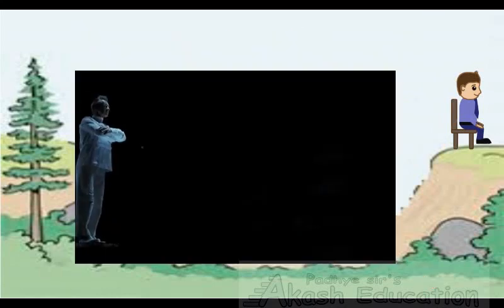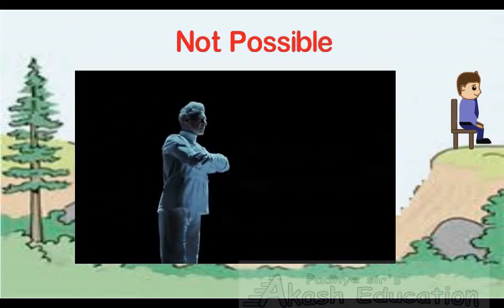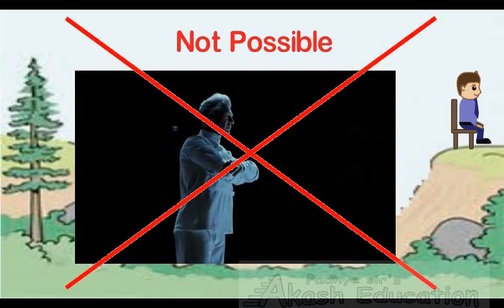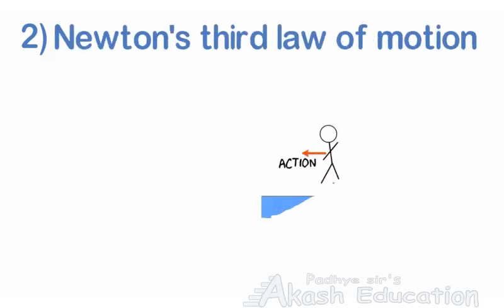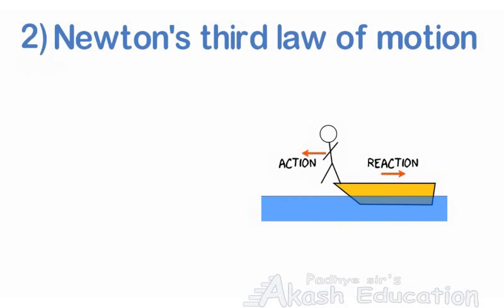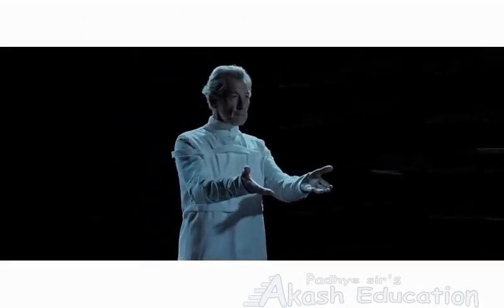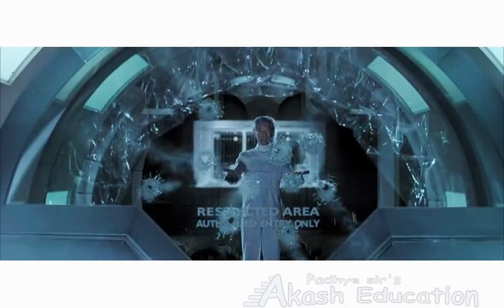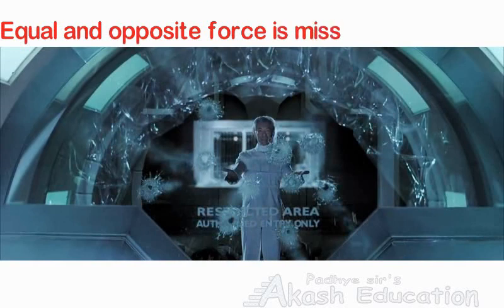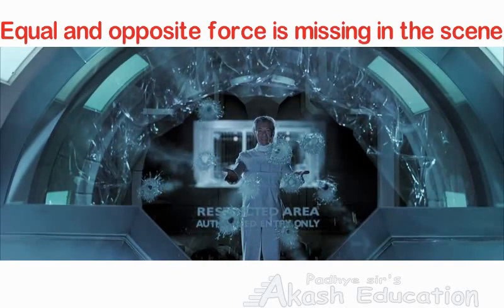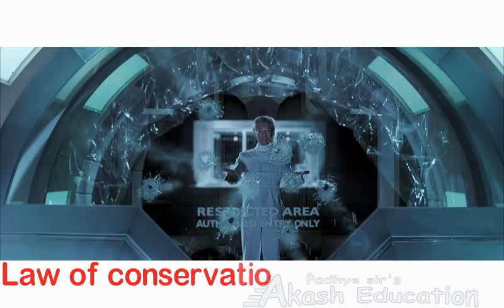Similarly, even though you have magnetic powers, you will not be able to stand on a metal plate and move it. The next principle which is violated in this scene is Newton's third law: every action has an equal and opposite reaction. According to this law, if you apply force on any object, that object will apply equal and opposite force on you. So in the actual scene, Magneto is repelling metal balls to break the glass or to kill the security guards. So equal and opposite force should act on him, which is missing in the scene. This can also be explained with the help of the law of conservation of momentum.